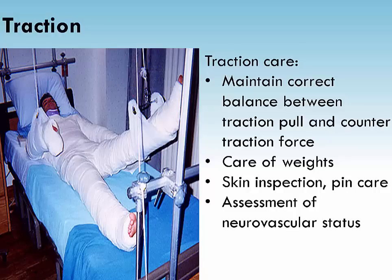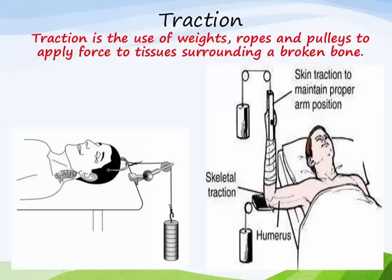Monitor respiratory status including rate, pattern, breath and lung sounds, and the ability to cough and deep breathe. Evaluate muscle strength, tone, and mobility in affected and unaffected areas. Assess mental status noting level of orientation, effectiveness of coping, and behavior. Regularly check the condition of traction equipment — ropes, pulleys, and weights — and eliminate any factors that reduce traction pull or alter its direction. Ropes and pulleys should be in straight alignment and unobstructed. The weights must be suspended and not in contact with the bed or floor. The patient's body should always be in alignment with the force of traction.